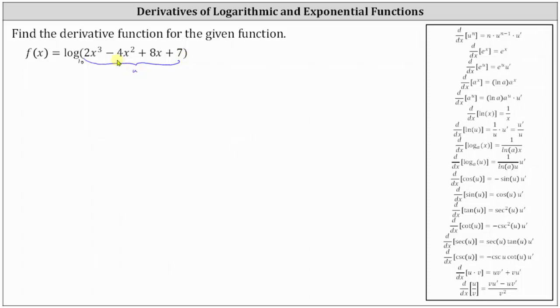So because we do have a composite function, we will have to apply the chain rule. So let's go ahead and list u, which is two x cubed minus four x squared plus eight x plus seven.